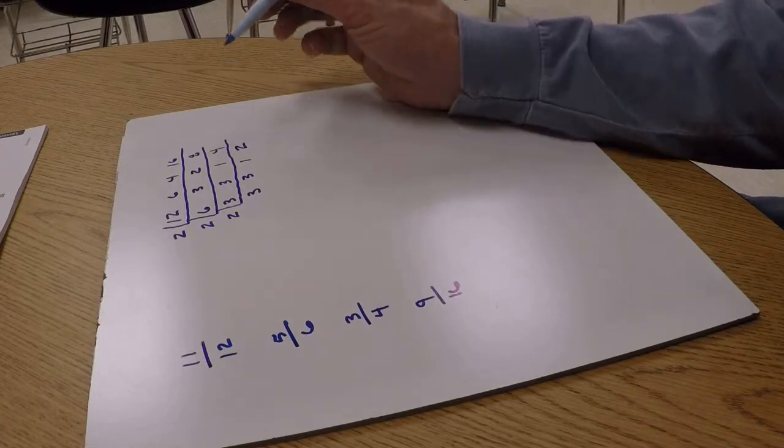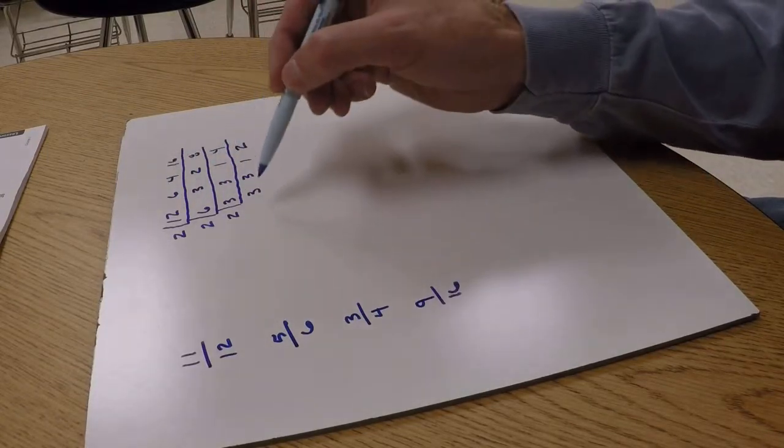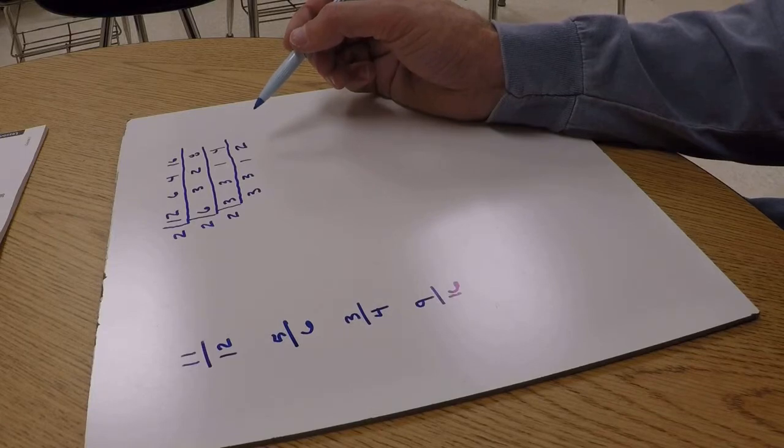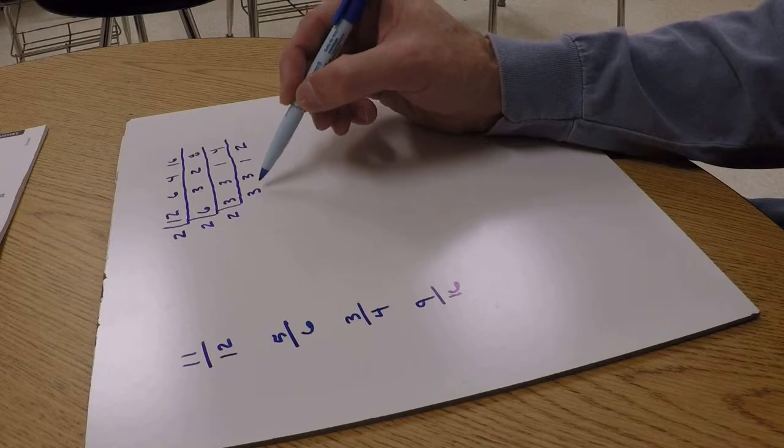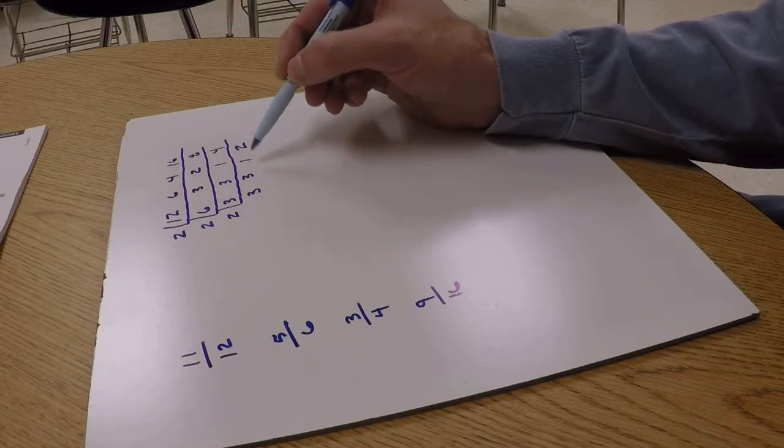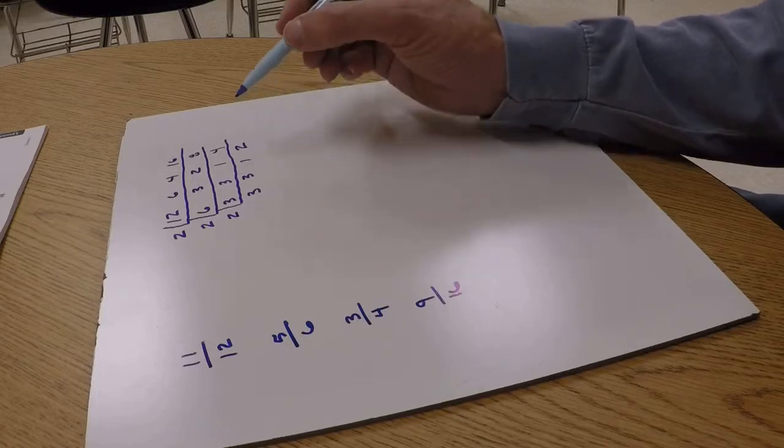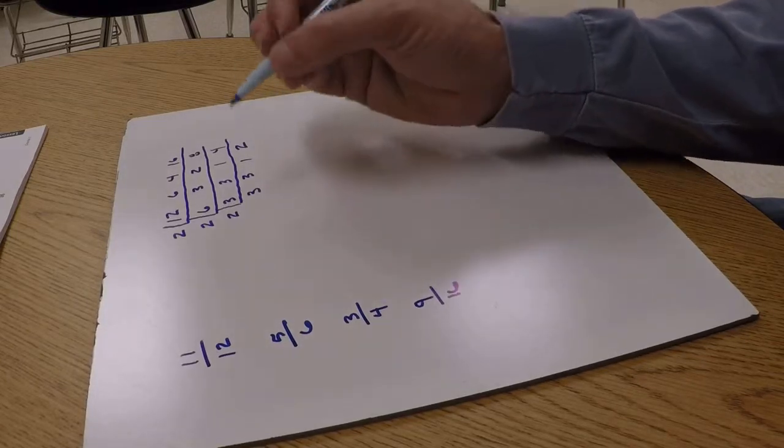But the problem is, using the ladder method, they said to multiply all these in an L shape will give you the least common multiple. And that will work unless you have repeating numbers on the bottom of the ladder that are greater than 1. See, we have two 3's right here. So I've got to get rid of those.